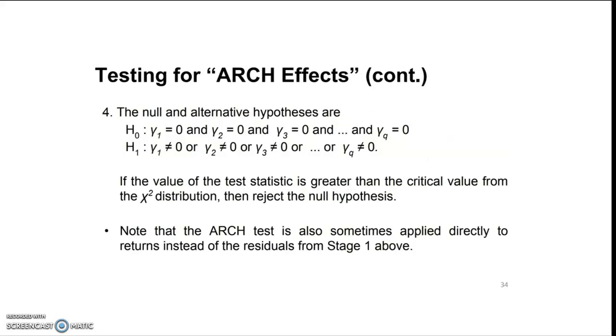Testing for ARCH effects: the null hypothesis and alternative hypothesis are as follows. In the null hypothesis all gammas are equal to 0, while in the alternative hypothesis they are assumed not to be equal to 0.